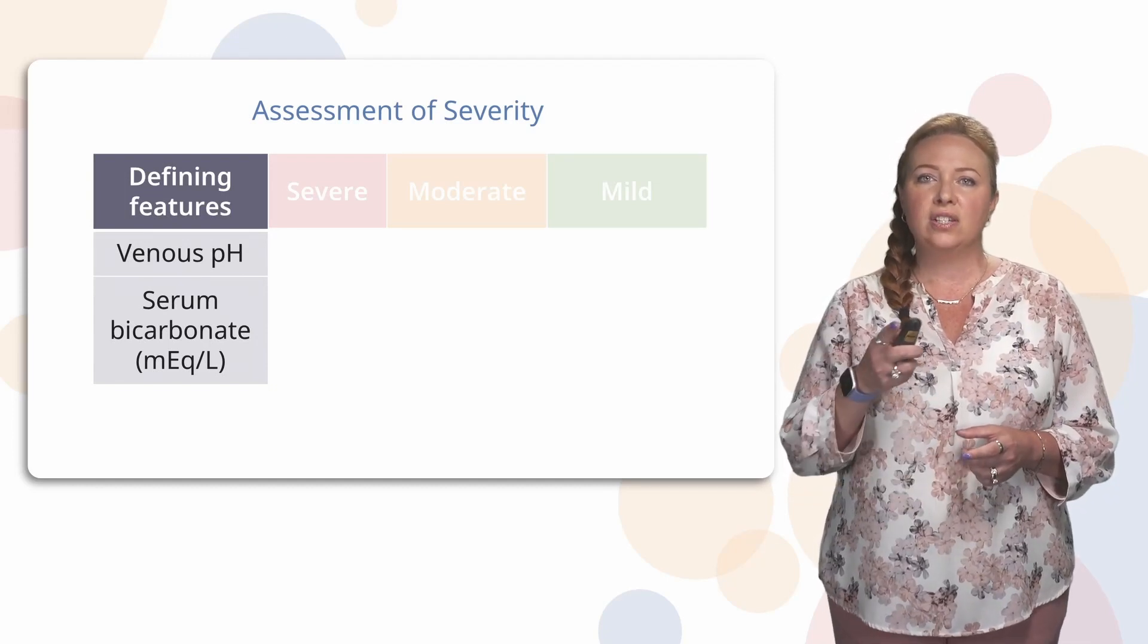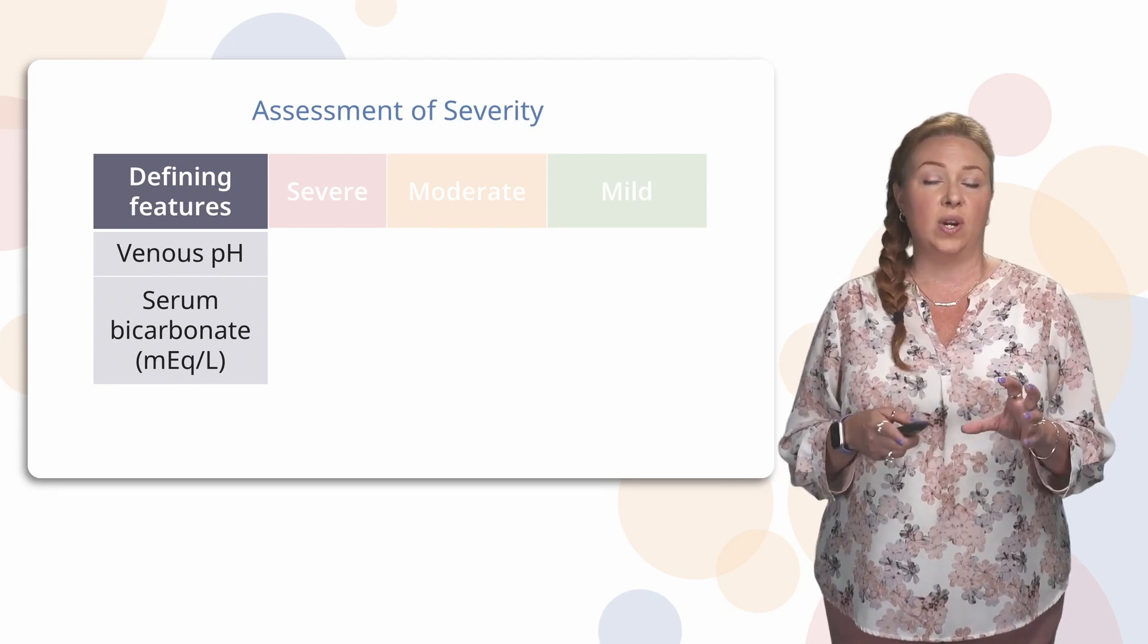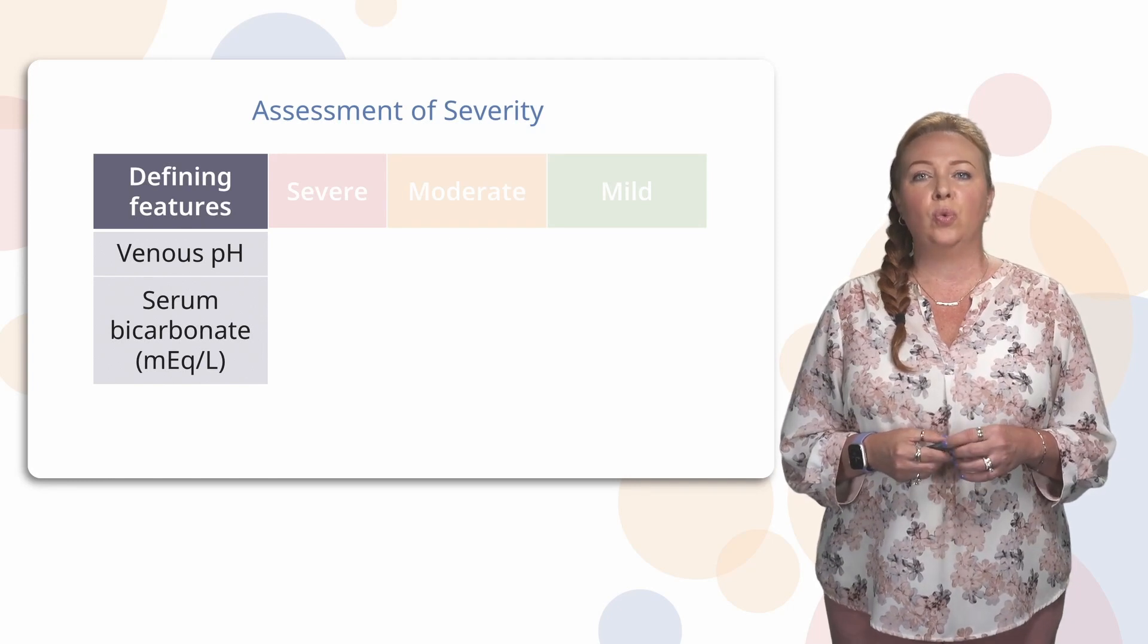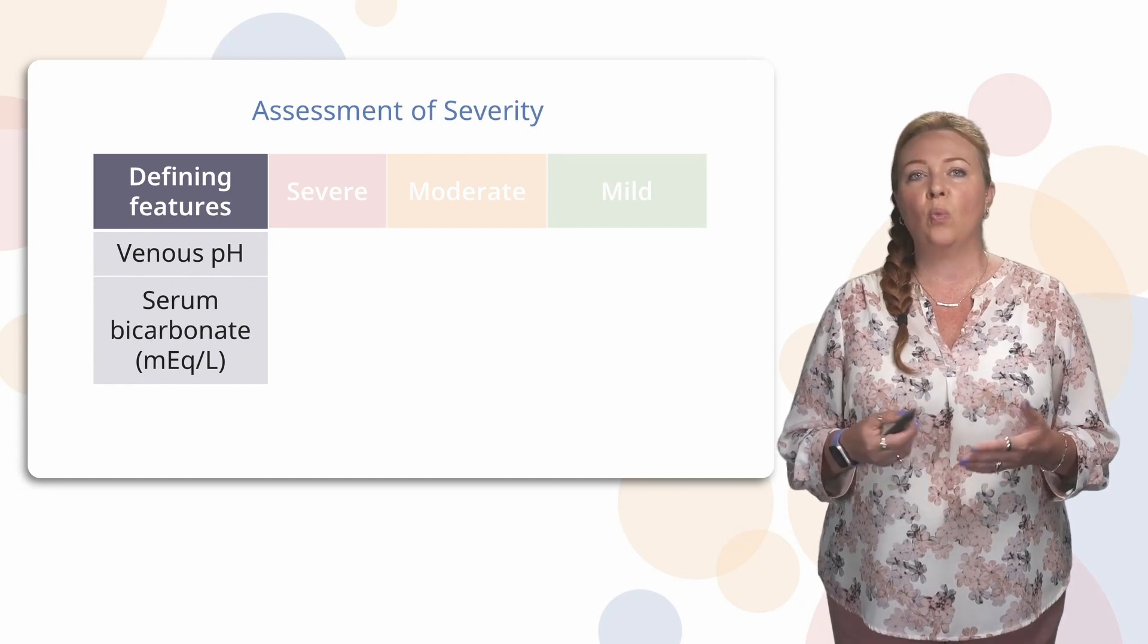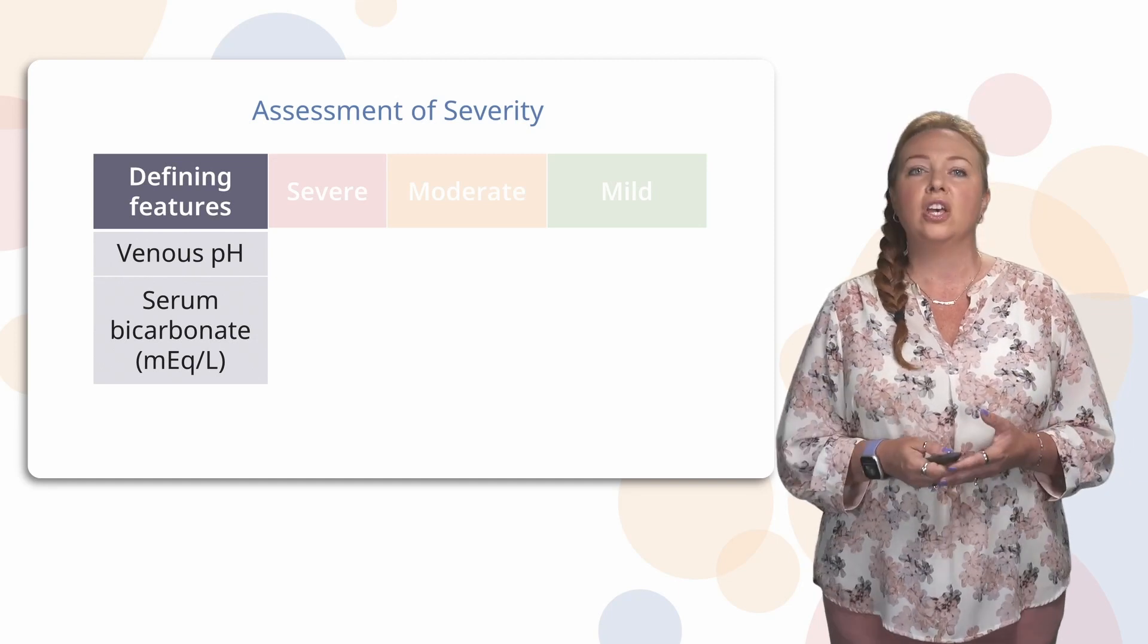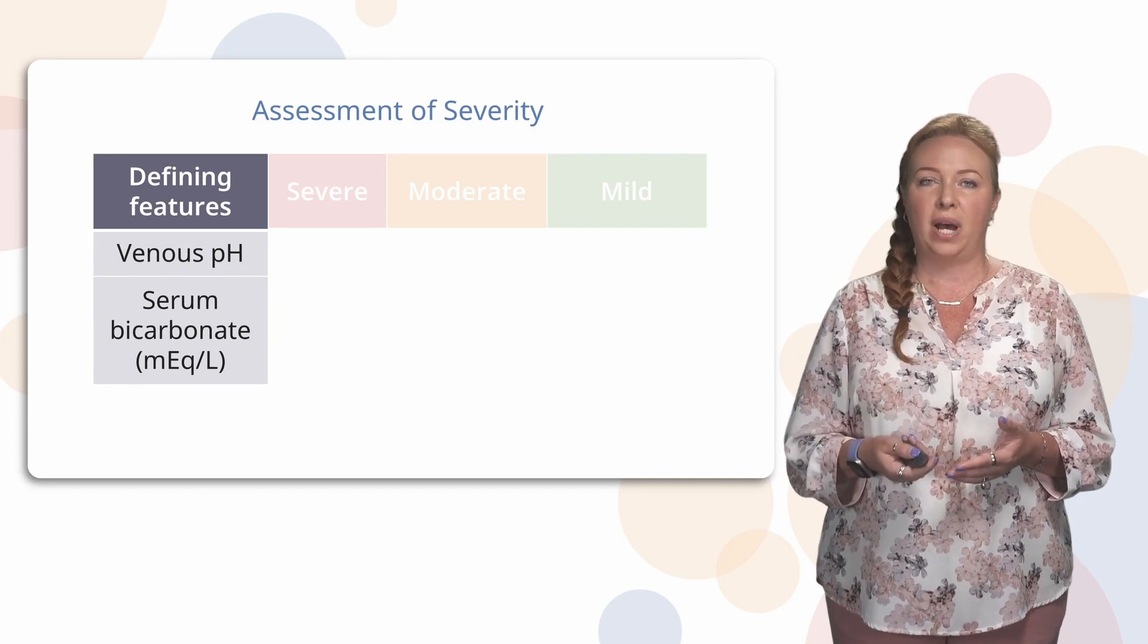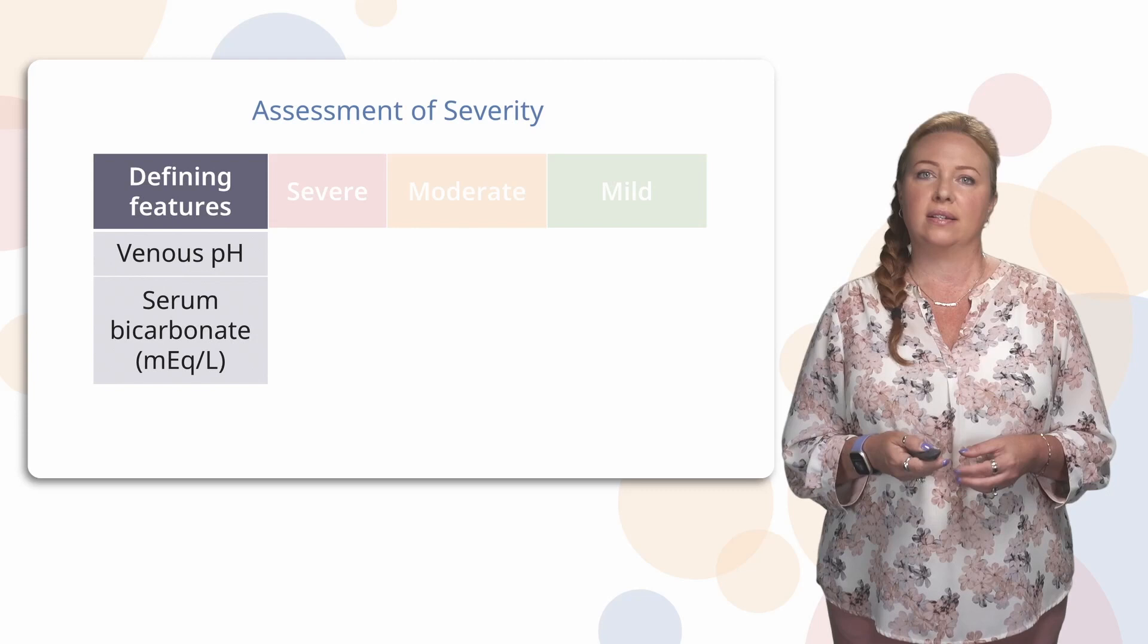And this first defining feature that we're going to talk about here really concentrates on the acidosis piece. And if you remember from previous learnings in your nursing program, when we are trying to figure out if our patients are acidotic, we use a blood gas. So we're going to look at the venous pH and the serum bicarb of our patients to figure out how bad this DKA really is.